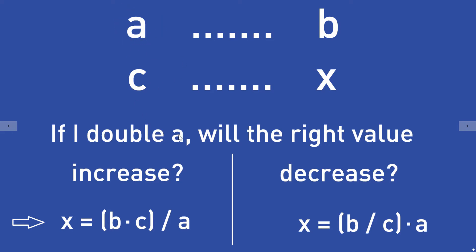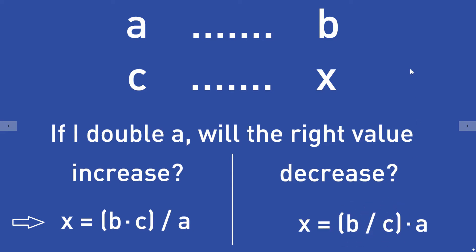If the answer to this question is decrease, the unknown value X is given by this formula: you have to divide B by C and then multiply the result with A. So X = (B / C) × A.